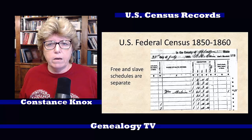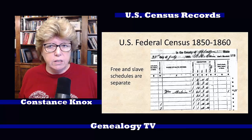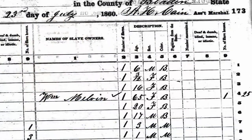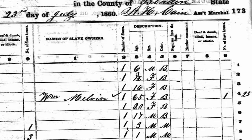Also keep in mind that free and slave schedules were separated between 1850 and 1860. This is an example of a slave schedule. In this case, the name of the slave owner is William Melvin. Number of slaves is one — age 65, sex female, color black, number of slave houses one. But there are no names for any of these slaves; they're just left blank. Here we have one 20-year-old female who is black, one 17-year-old male who is black, one 3-year-old male who is mulatto, and one 1-year-old male who is mulatto.